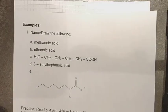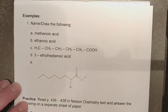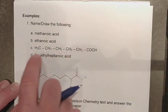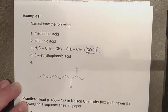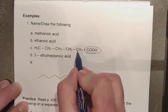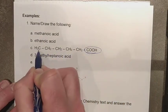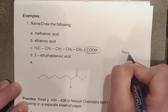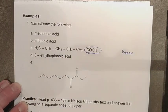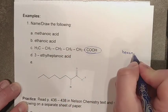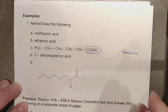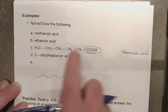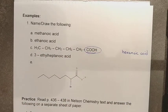For the next example, we have a long chain with the carboxyl group at carbon one. Counting along the chain: one, two, three, four, five, six — so we have hexane, all single bonded. Drop the -e, put on the -oic suffix, add a space, and write the word 'acid.' That gives you straight-chain hexanoic acid.